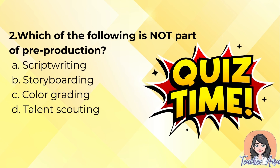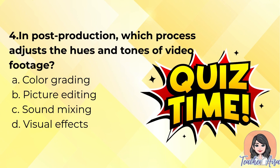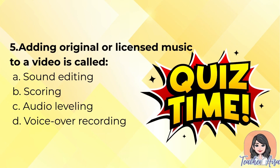Question 3: The visual sketch of scenes in a video, often like comic panels, is called: A) Shot list, B) Storyboard, C) Screenplay, D) Camera angle. Question 4: In post-production, which process adjusts the hues and tones of video footage? A) Color grading, B) Picture editing, C) Sound mixing, D) Visual effects. Question 5: Adding original or licensed music to a video is called: A) Sound editing, B) Scoring, C) Audio leveling, D) Voice-over recording.